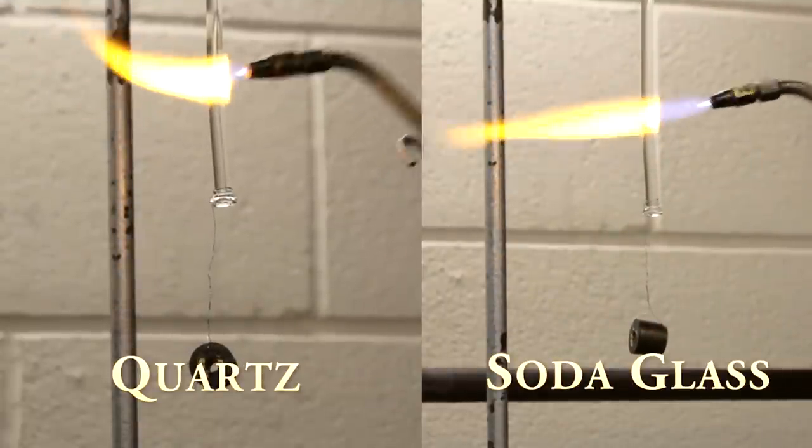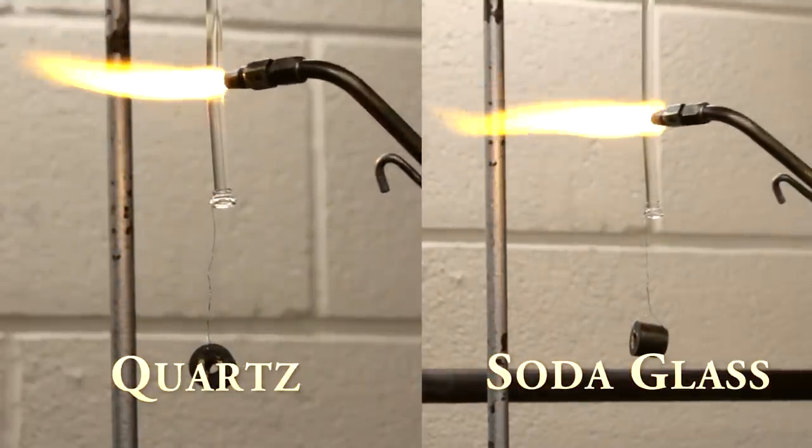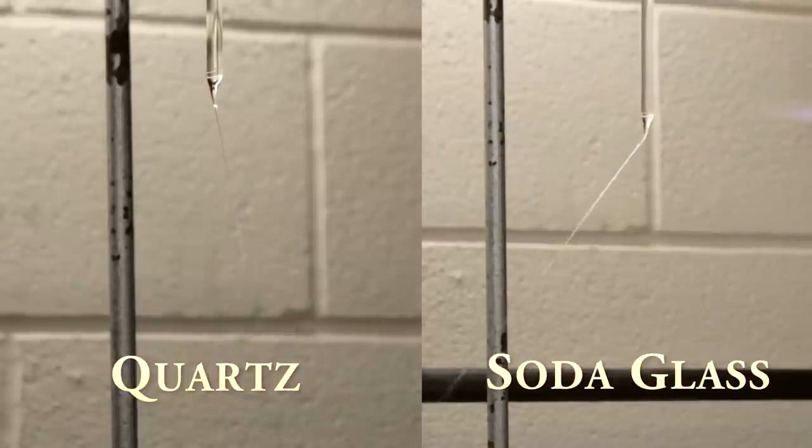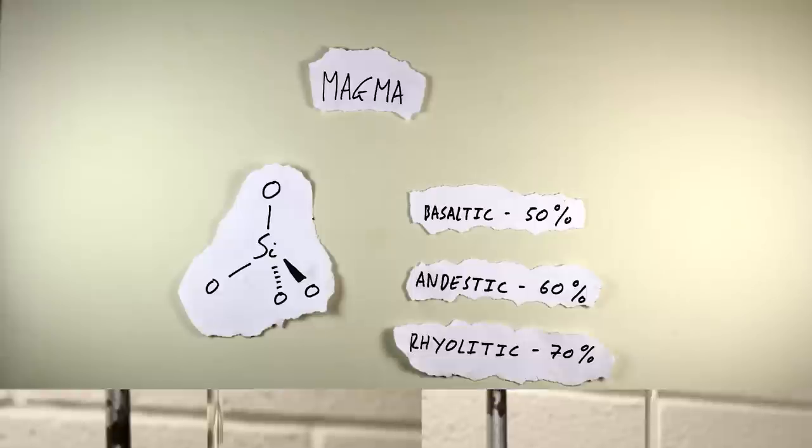Like magma, glass is primarily composed of silica. This demonstration shows that for quartz, that has a high percentage of silica, more energy is required for it to start flow than soda glass, a much lower percentage of silica. This is much like the differences between rhyolitic and basaltic magmas.